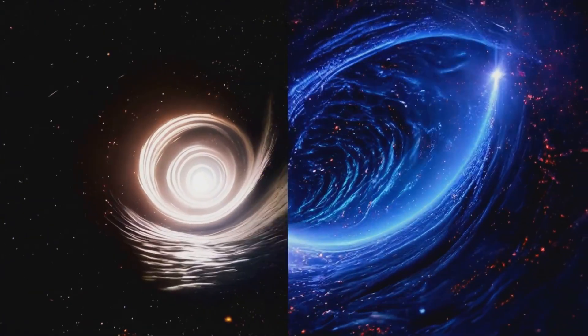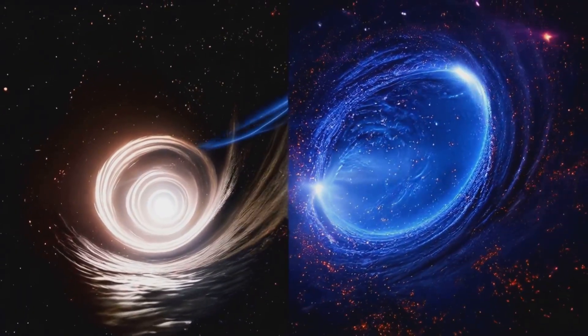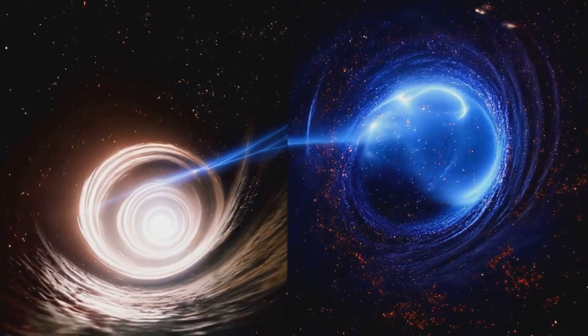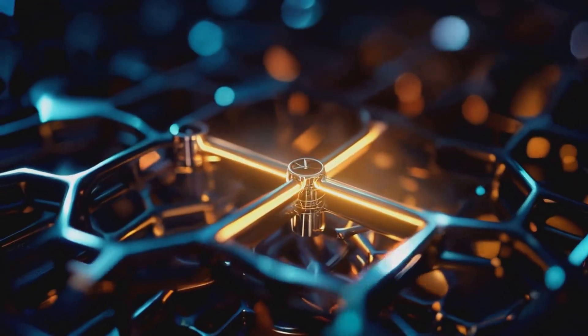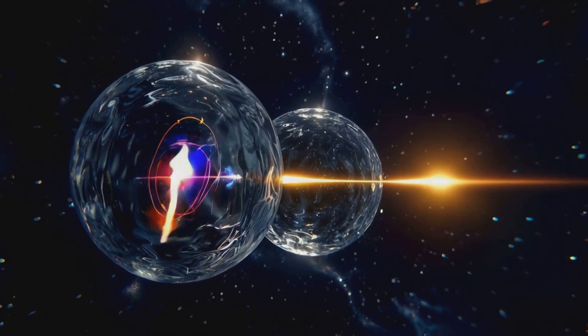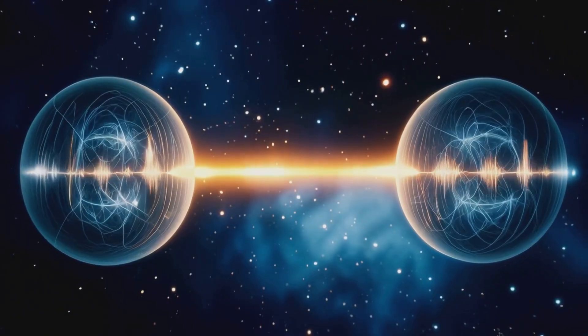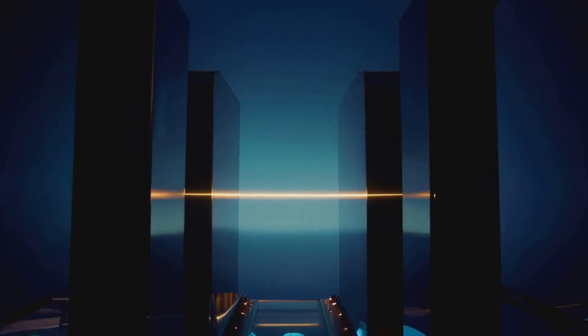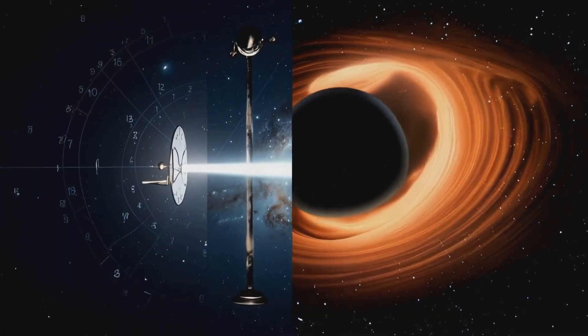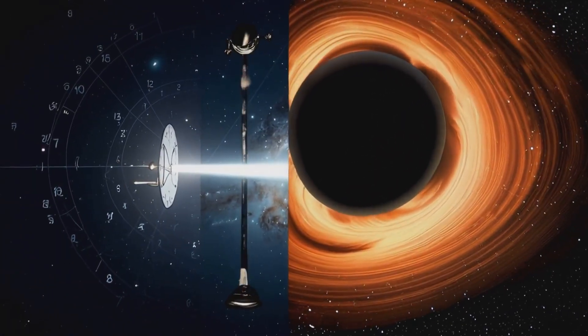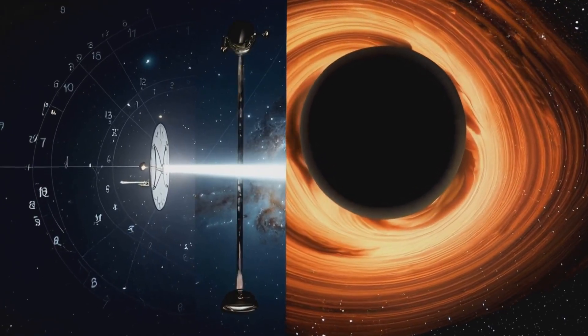These vectors, existing outside of space-time, hold the potential for all possible outcomes of a quantum measurement. Think of these state vectors as architects of reality. They reside in a realm beyond our universe, a place called Hilbert space. This space isn't bound by the limitations of our reality. It's a realm of pure information where all possibilities coexist. When a measurement occurs, a single possibility is selected from the state vector, collapsing the wave function and bringing that specific outcome into our reality.